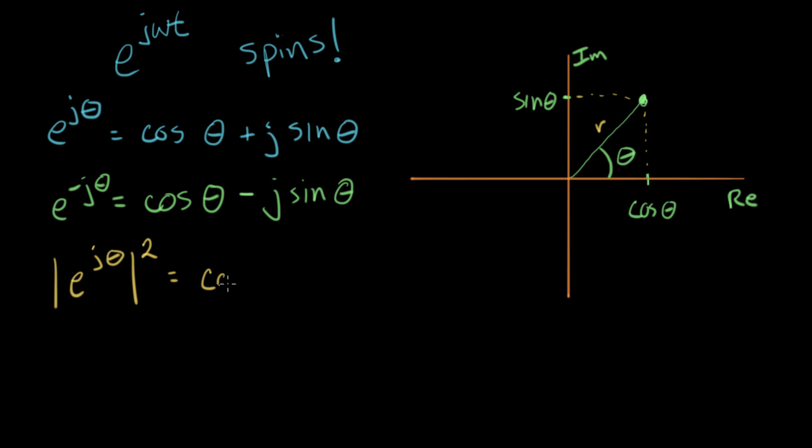So it equals cosine squared of theta plus sine squared of theta. That's just, we just applied the Pythagorean Theorem to this right triangle. Now from trigonometry, we know what? What's the value of this? Cosine squared plus sine squared for any angle equals one.